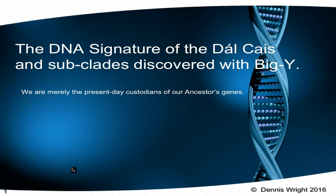The Y chromosome is passed almost intact from father to son, and so shows the origins of a man's paternal line far back into the mists of time. I'd like to talk to you today about the Y chromosome studies that revealed the STR and SNP signatures of an old Irish clan, the Dalcassian, otherwise known as Irish Type 3.